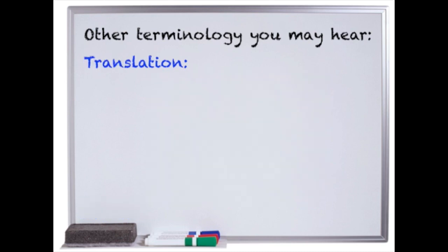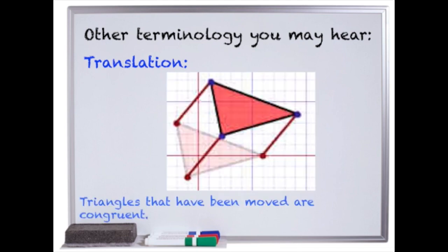Another word often used in congruence is translation. Translation means that something has been slid across or moved. Triangles that have simply been moved are still congruent.